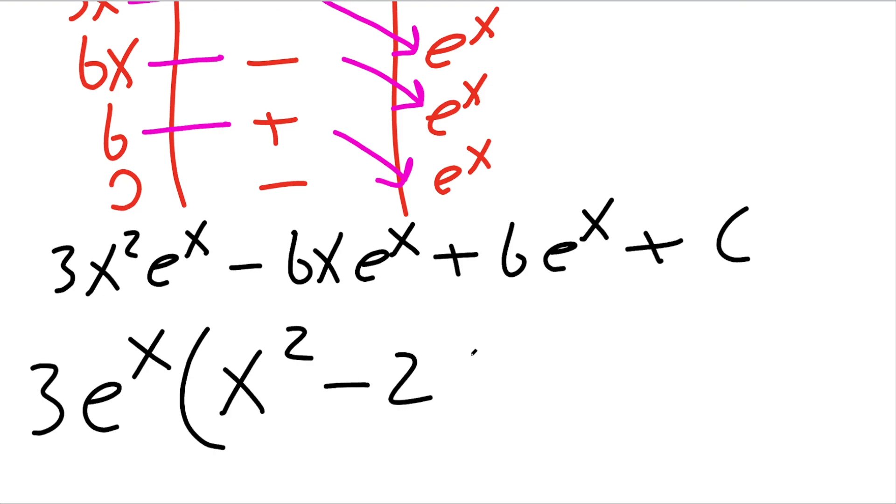So negative 2x. And then this piece, plus 2, would give you 6 e raised to x. And don't forget the plus c.